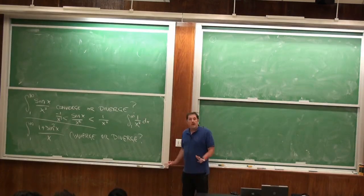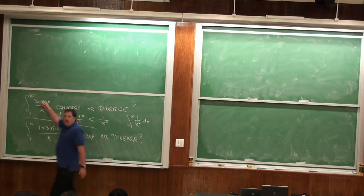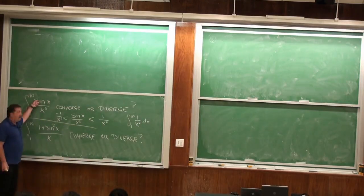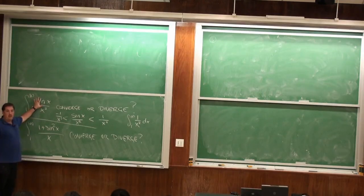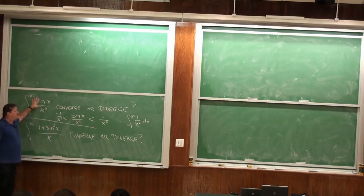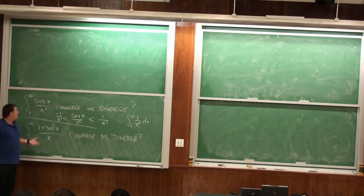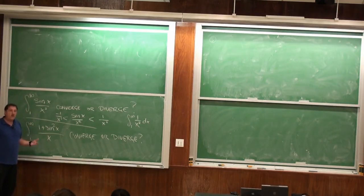The sine is between 1 and −1 all the time, so the numerator is never bigger than 1 and never less than −1. A lot of times in calculus when you see a sine or cosine, you should think, maybe I can replace that with 1. You can't always, but sometimes you can — so you should think about it.